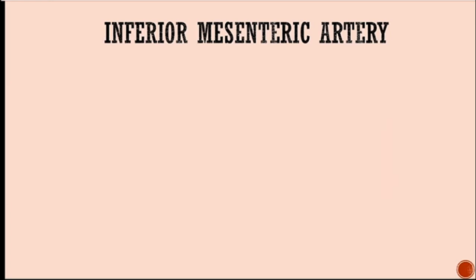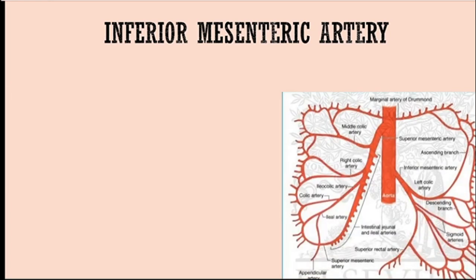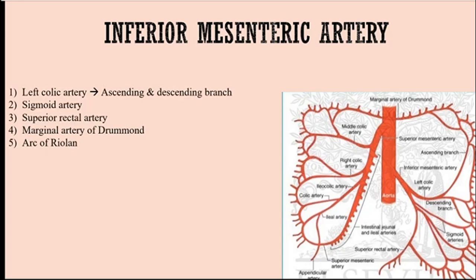Moving on to the inferior mesenteric artery: you have the left colic artery which has ascending and descending branches, supplying the distal one-third of the transverse colon and the descending colon. You have the sigmoid artery supplying the sigmoid colon, and the superior rectal artery supplying the superior rectum, which anastomoses with the middle and inferior rectal arteries. There is collateral flow between the inferior and superior mesenteric arteries through the marginal artery of Drummond and the arc of Riolan, as seen here.